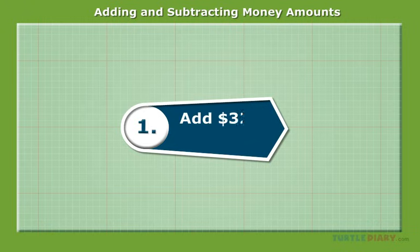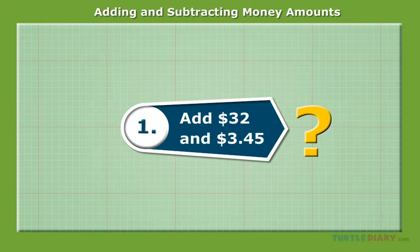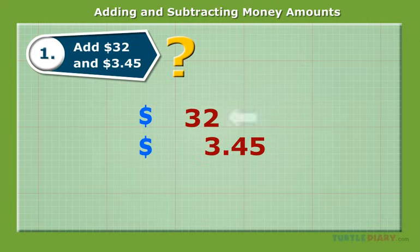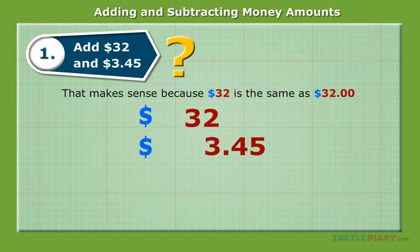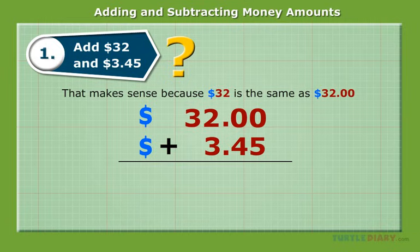Add $32 and $3.45. We need to line up the decimals. Remember that since there's no decimal written in $32, it's understood to be at the end. If you want, you can include the placeholder zeros after $32. Now add the numbers as usual. $35.45.